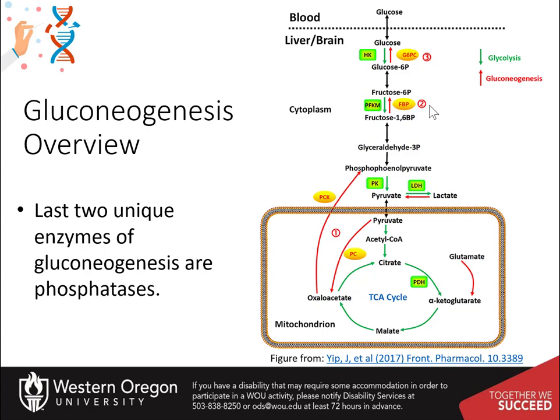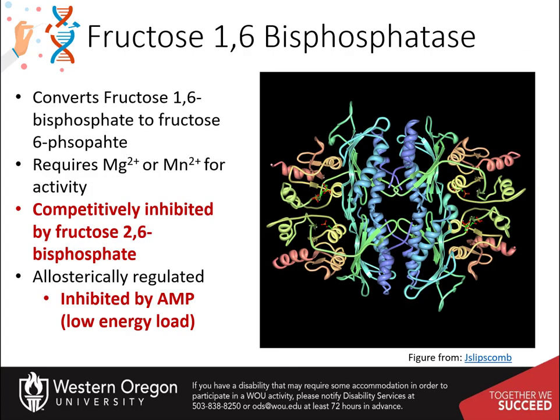The last two unique enzymes of the gluconeogenic pathway are both phosphatase enzymes. Fructose 1,6-bisphosphatase converts fructose 1,6-bisphosphate to fructose 6-phosphate, and glucose 6-phosphatase converts glucose 6-phosphate into free glucose. Fructose 1,6-bisphosphatase requires a metal cofactor and is competitively and allosterically regulated.